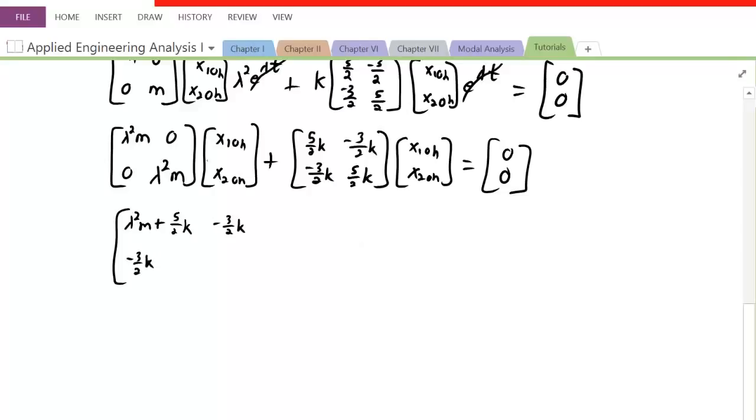And we take lambda squared M plus 5 over 2 K again. And this is all in respect to X1 not H and X2 not H, equal to 0 over 0.